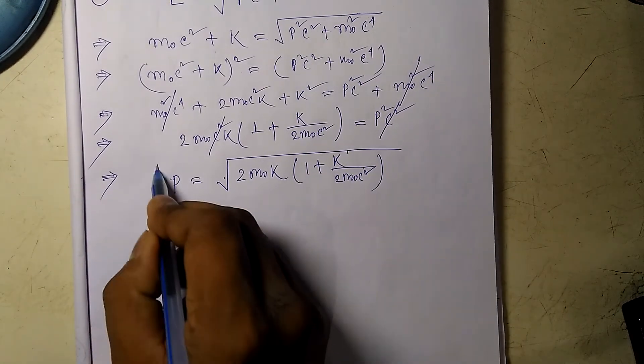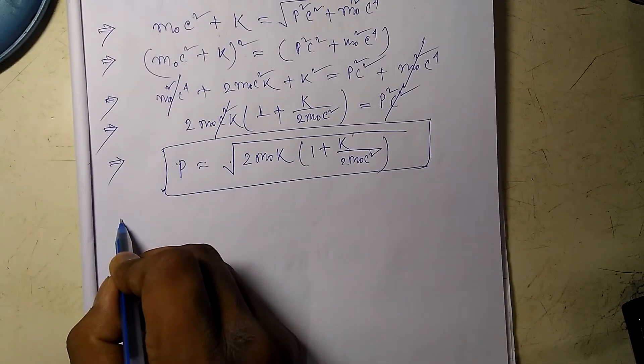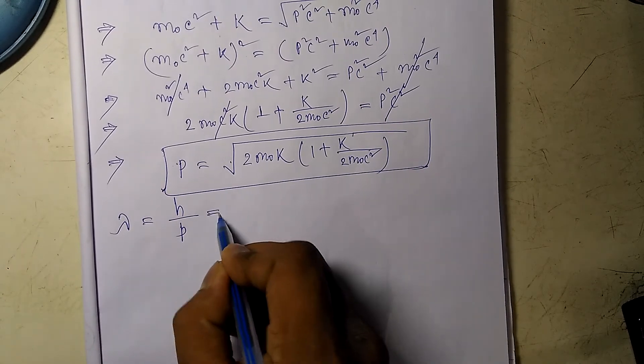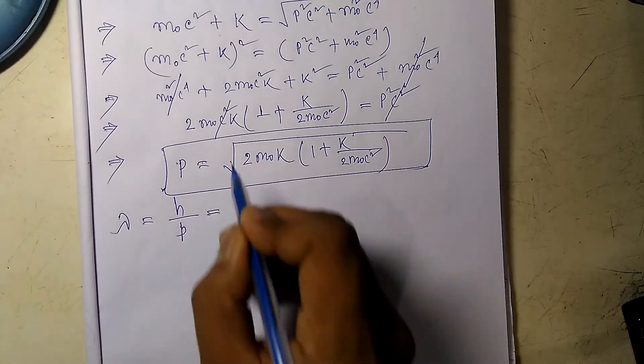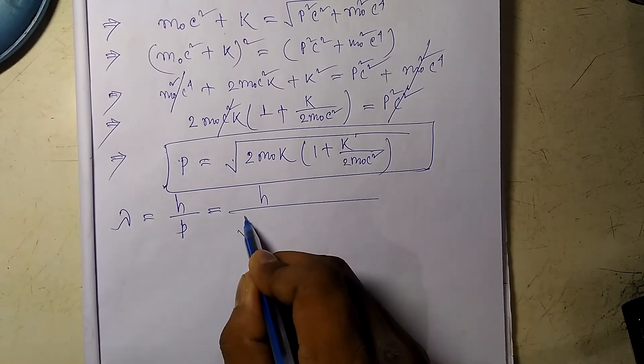We have the momentum, so we can find the wavelength from the de Broglie hypothesis: lambda equals h divided by p, so it would be h divided by the square root of...